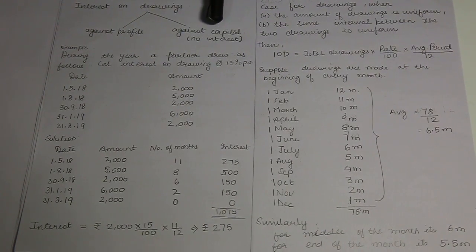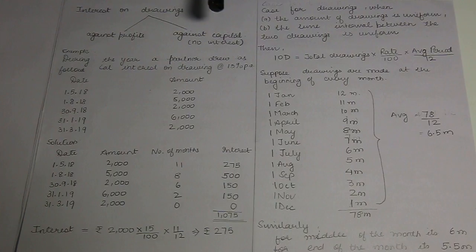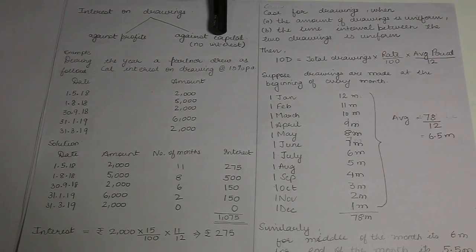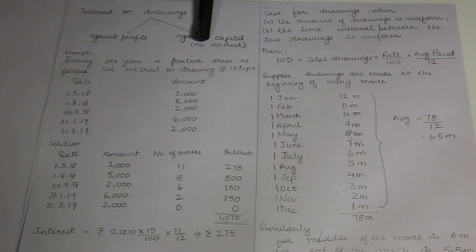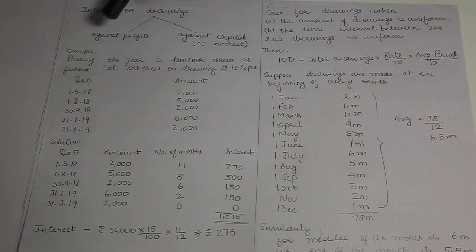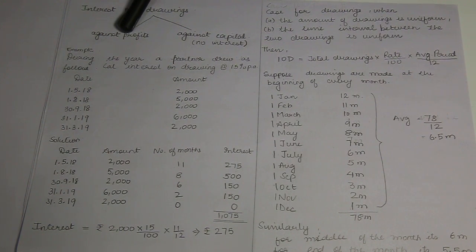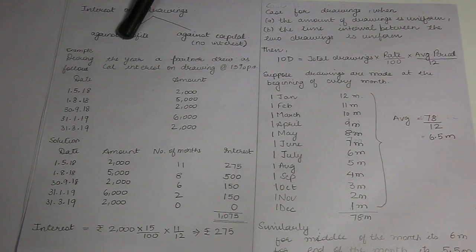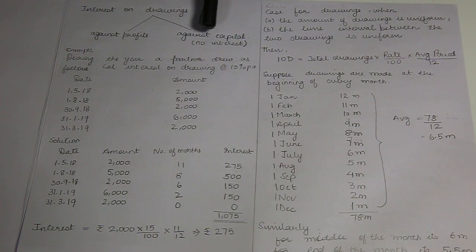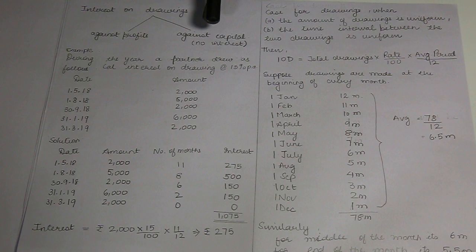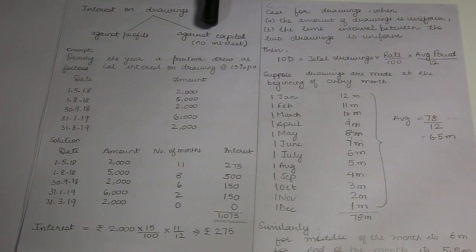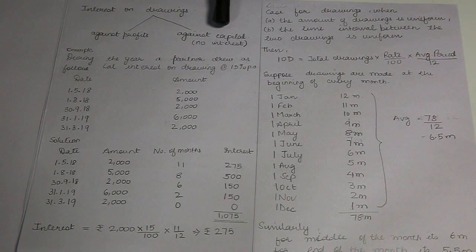Interest on drawings will be charged to a partner when they withdraw from the firm. If drawings are against the current account — that is, debited in the current account — then interest on drawings will be charged to the partner, which becomes income for the business and expense for the partner. But if drawings are against capital — that is, they come in the capital account, not the current account — then that is considered a withdrawal of capital, and for withdrawal of capital there is no charge of interest on drawings. Your capital will be reduced, and interest on capital will also be reduced accordingly.